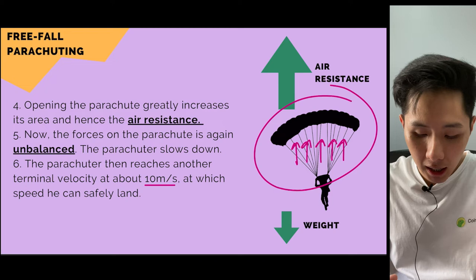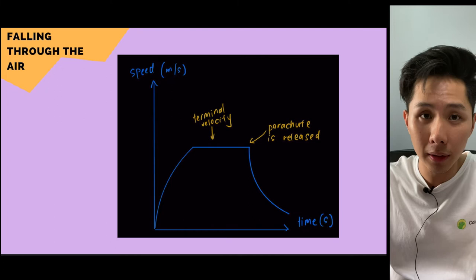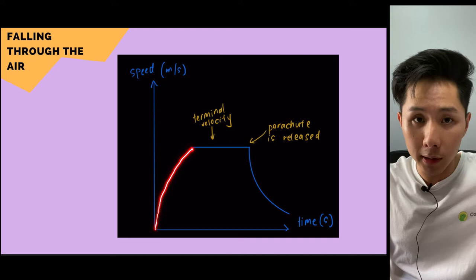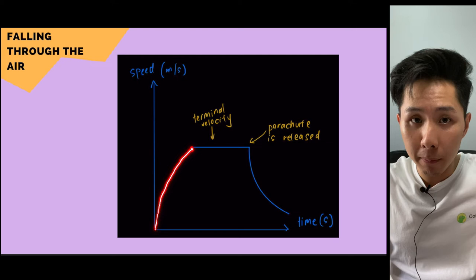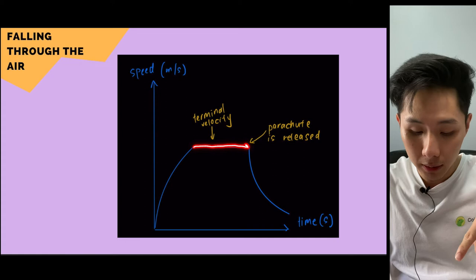Here's the speed-time graph of the parachute. Initially the speed increases drastically because there's a resultant downward force — weight is much greater than air resistance. As speed increases, air resistance also increases, until weight and air resistance are equal. This is when the parachute reaches terminal velocity.